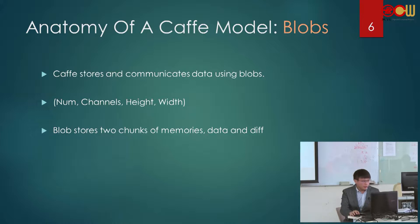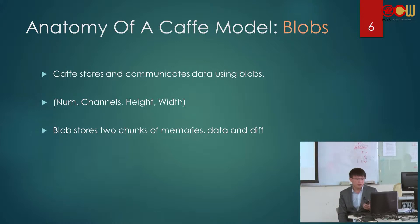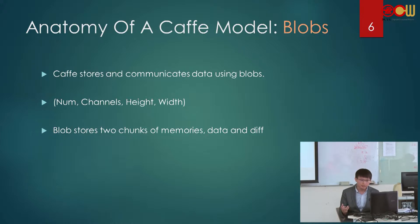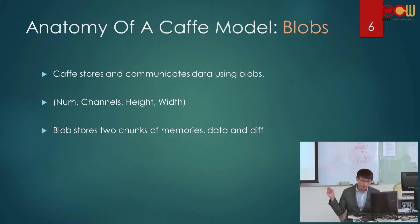Blobs look like four-dimensional arrays. The first index is called N (number), which is the batch size of the data. During training, we may not use the entire training set in every iteration. Instead, we set a batch size N, meaning we choose N samples from the whole dataset to calculate in each iteration.